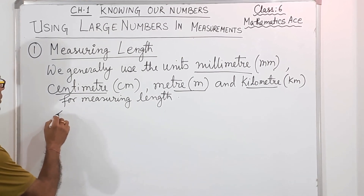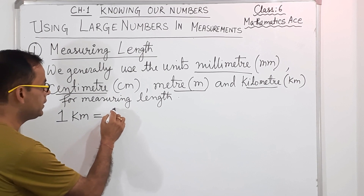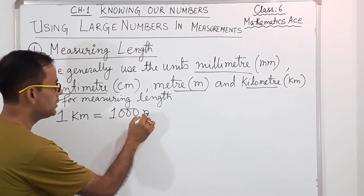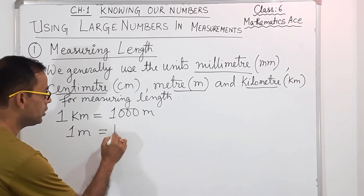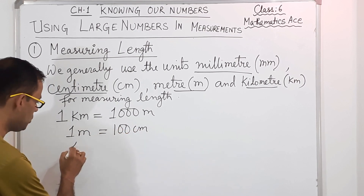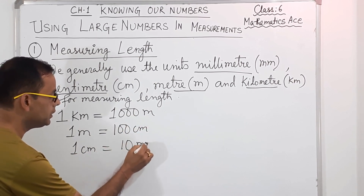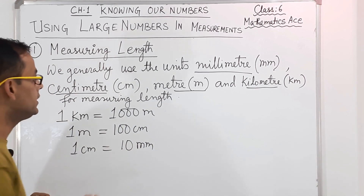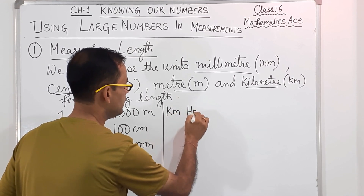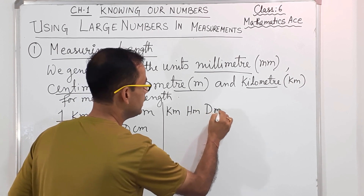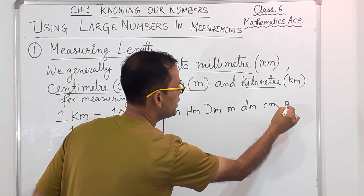Now suppose if I write 1 kilometer — 1 kilometer means how many meters? It will be 100 cm. Now 1 centimeter means how many millimeters? It will be 10 mm. Actually, the full order is: first kilometer, then hectometer, then decameter, then meter, then decimeter, then centimeter, and the last one is millimeter.